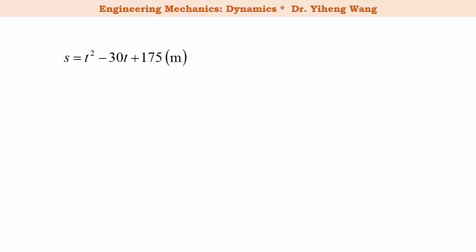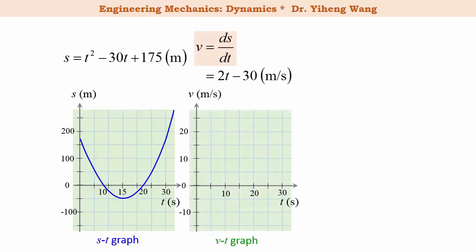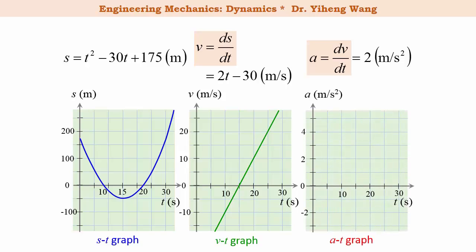Let's quickly look at another example. Here we have another position function given as a function of time for a continuous rectilinear motion. Based on this function we can sketch the s-t graph showing how position changes with time. Differentiating gives velocity as a function of time and we can sketch the v-t graph. Differentiating again, we find the acceleration is a constant 2, and we can graph this constant function to get the a-t graph.